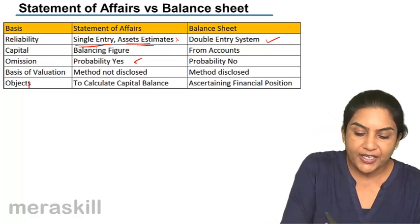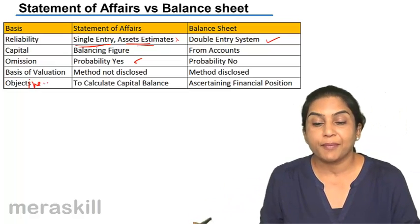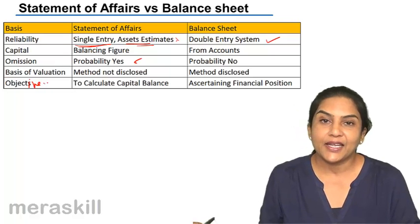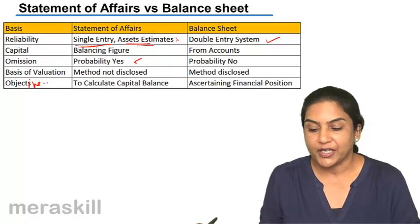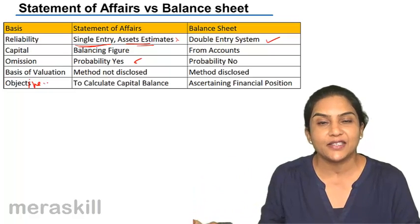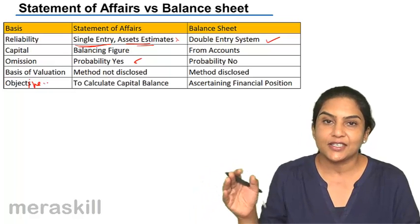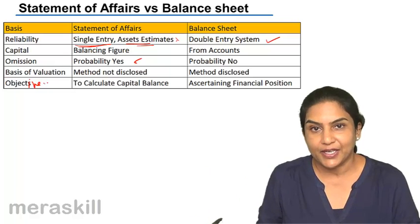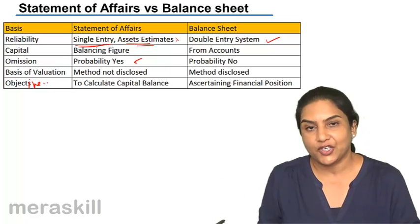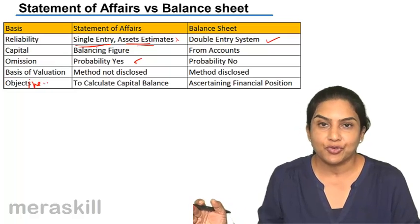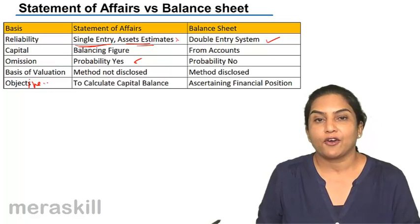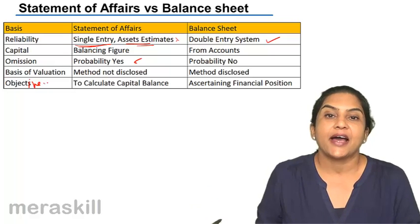What is the objective? The objective in preparing a statement of affairs is to arrive at the balance of capital. But in case of a balance sheet, the objective is to ascertain the financial position. It consists of all the balances of assets and liabilities derived from the ledger accounts and helps to ascertain the financial position. A statement of affairs is often prepared to find out what is the capital as on that date.